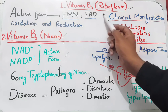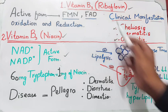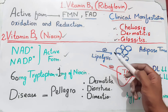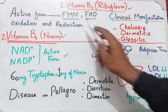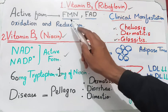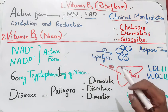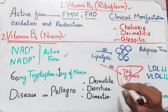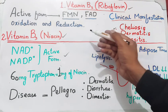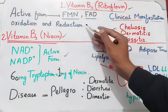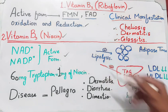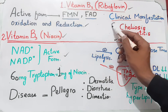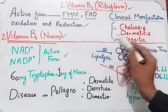Vitamin B2 — its chemical name is riboflavin. It has two active forms: number one is flavin mononucleotide (FMN), and the other is flavin adenine dinucleotide (FAD). It is mainly involved in oxidation-reduction reactions. It is considered less important because of its limited clinical manifestations.